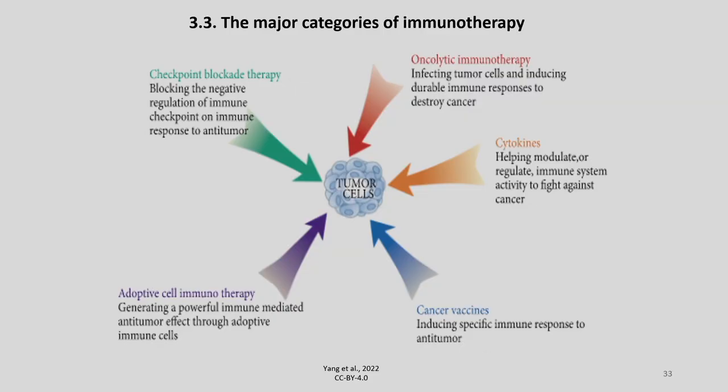Welcome to my course on Genome Editing and Engineering. We are discussing engineered immune cells for cancer therapy. In part A we discussed the basics of immune therapy and the tumor microenvironment and the two main immunotherapeutic approaches. Here let us look into the major categories of immunotherapy. One important category is the checkpoint blocker therapy, where we block the negative regulation of immune checkpoints on immune response to anti-tumor.